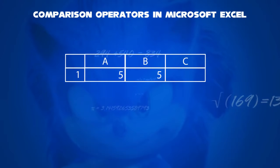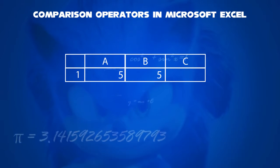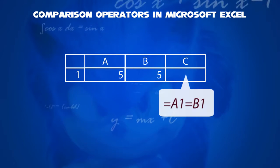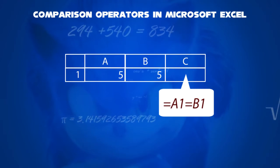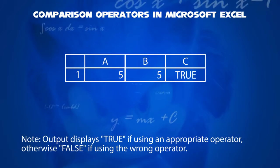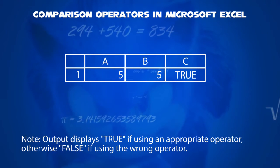Say 5 in cell A1 and 5 in cell B1. What you can write is an output of the following in cell C1: that is A1 equal to B1. The output is true. Otherwise, false will be displayed if you use the wrong operator.